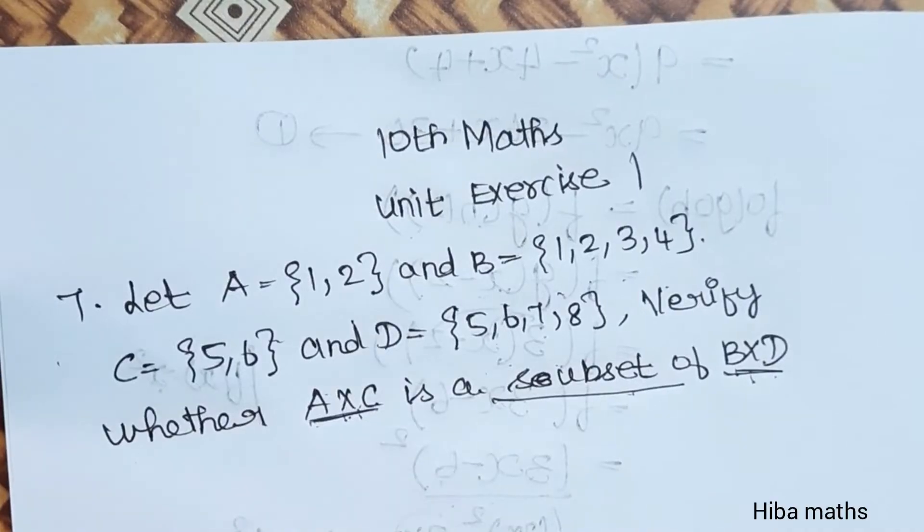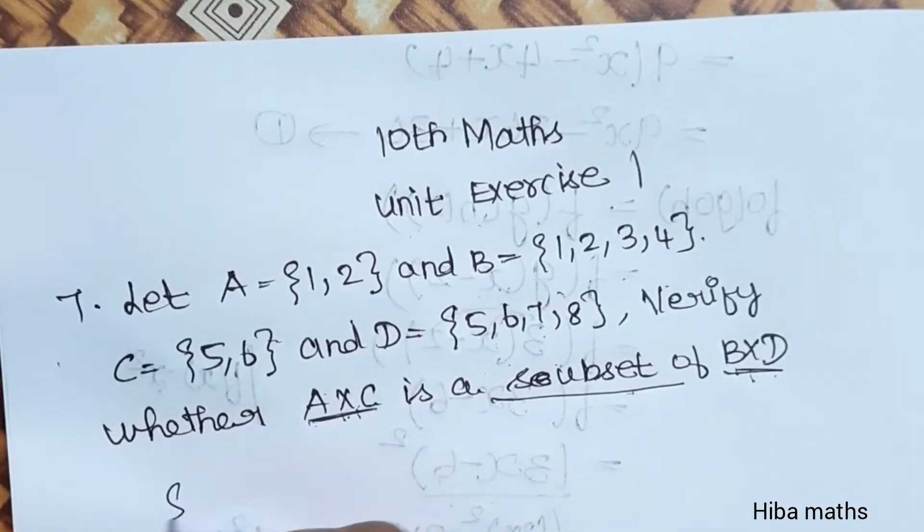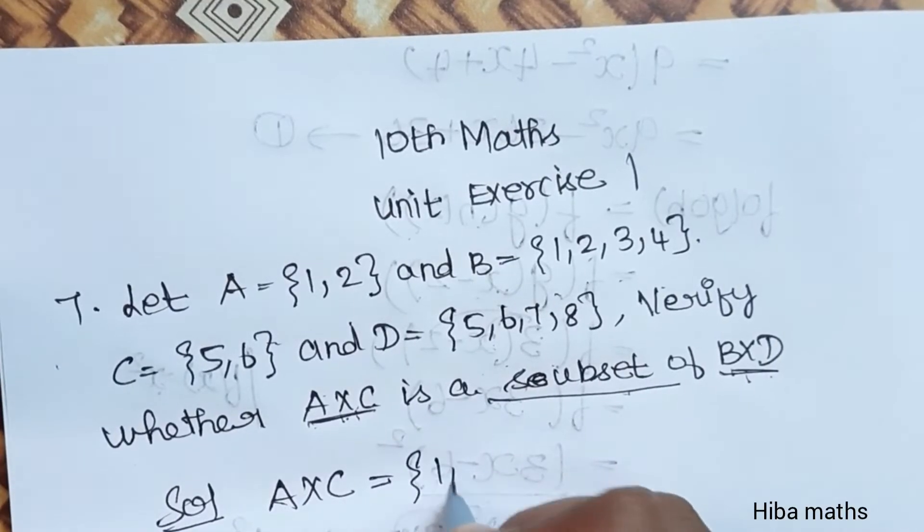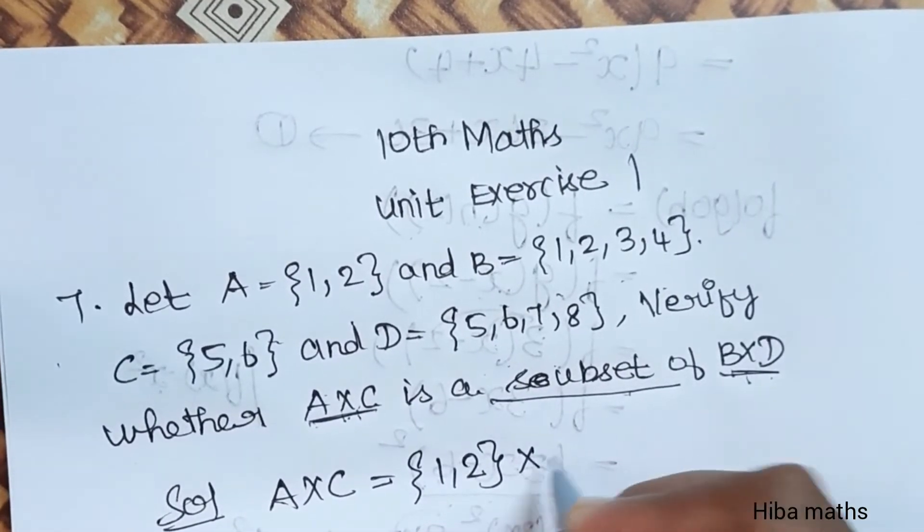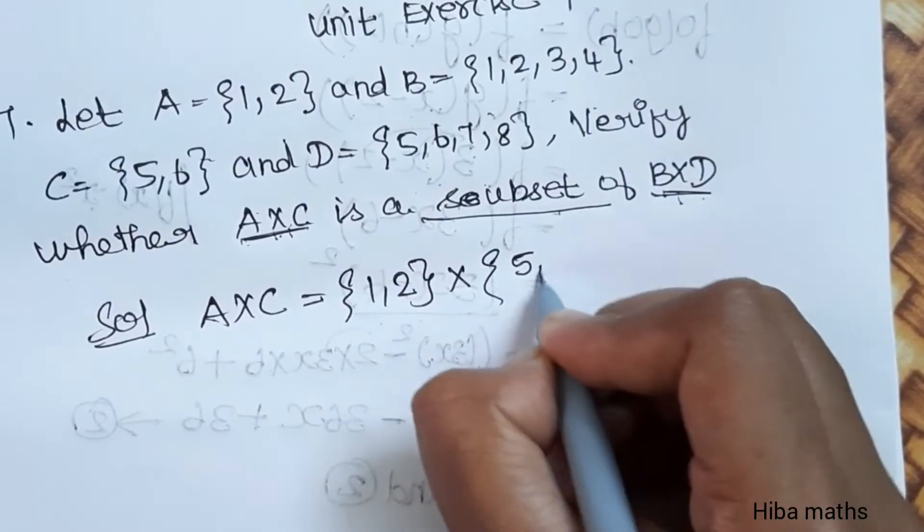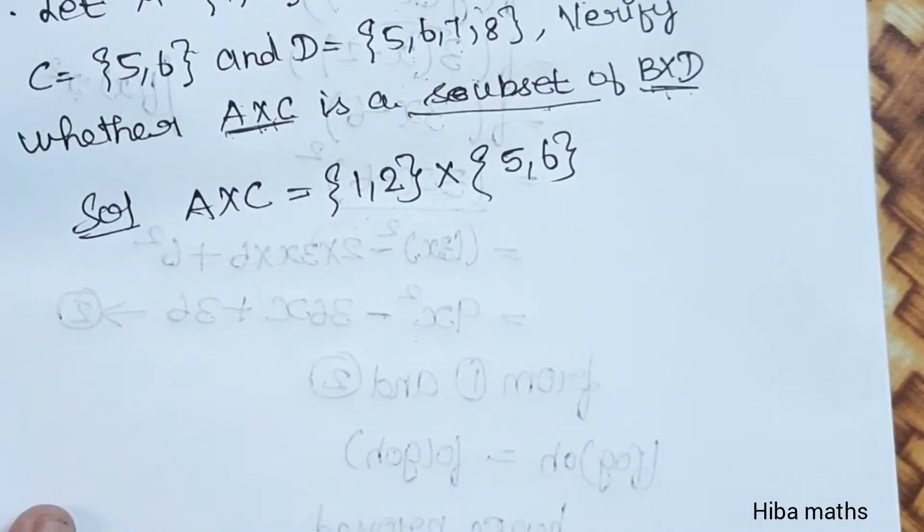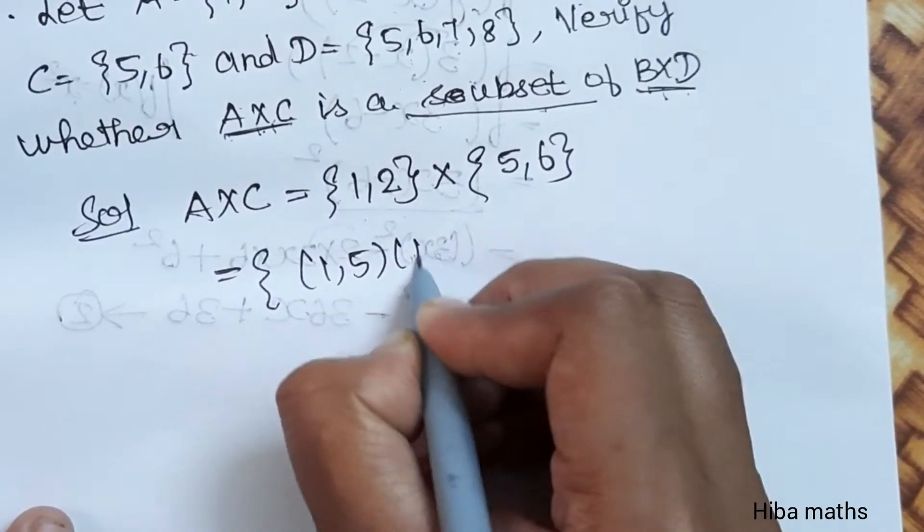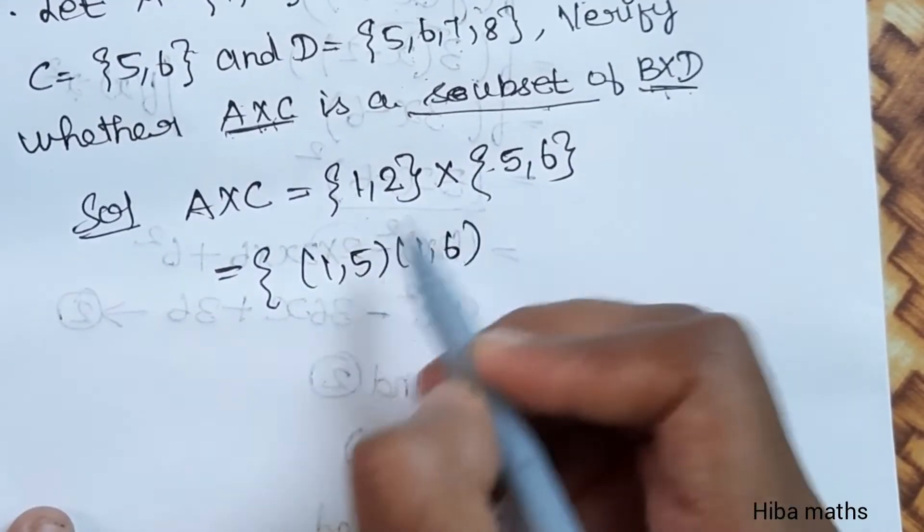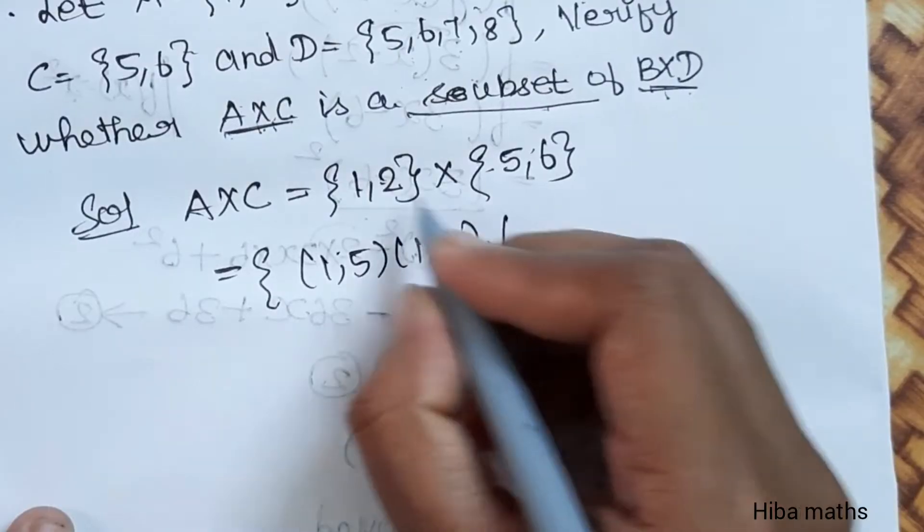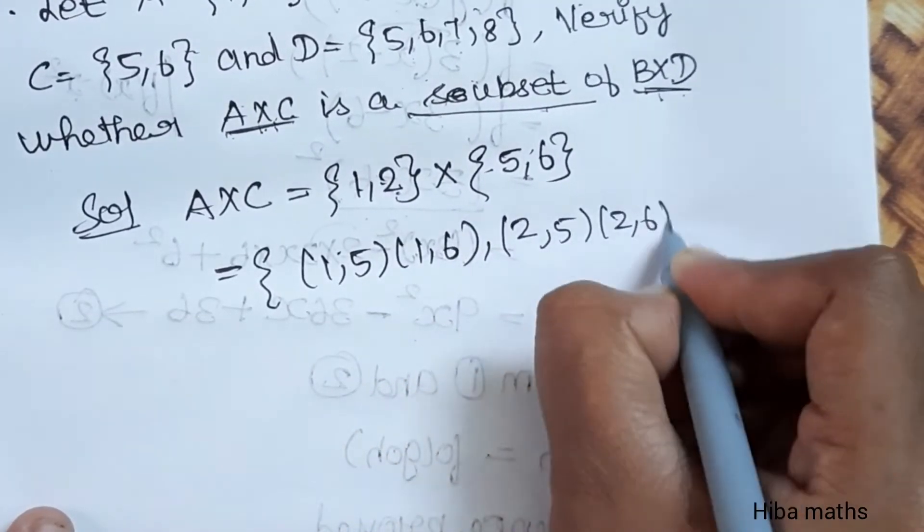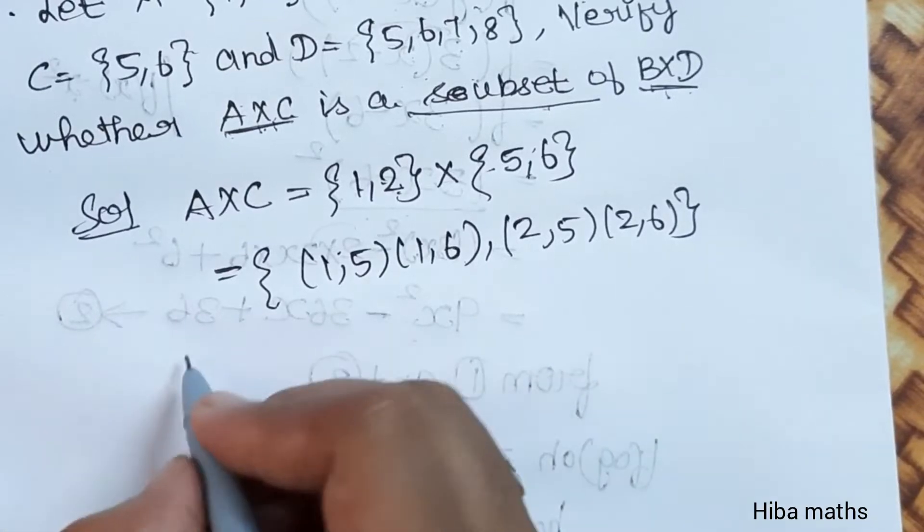Solution: First compute A×C. A×C = {1,2} × {5,6}, which gives us ordered pairs including (2,5) and (2,6). This is A×C.